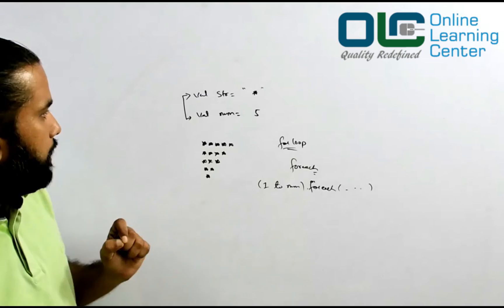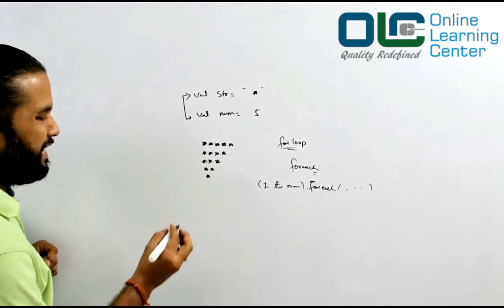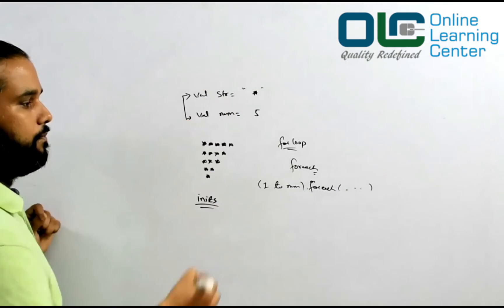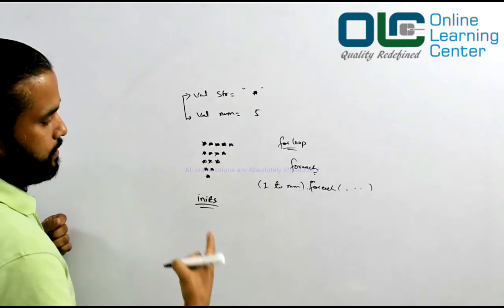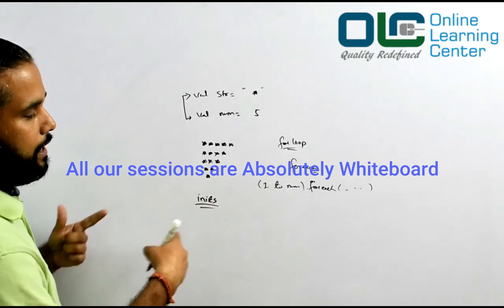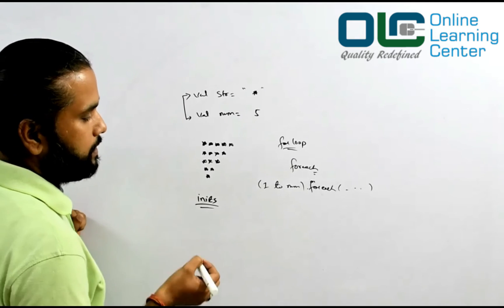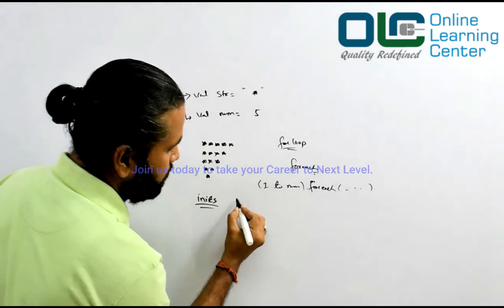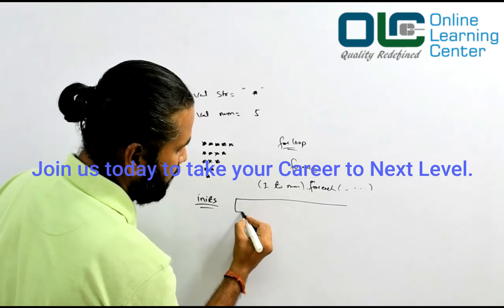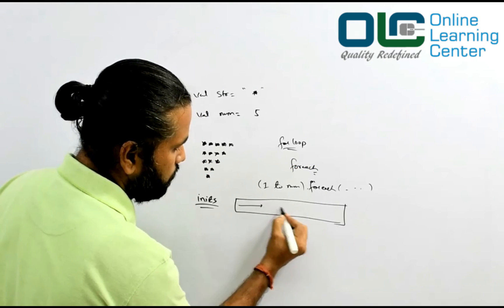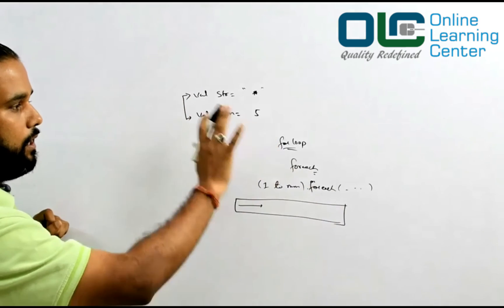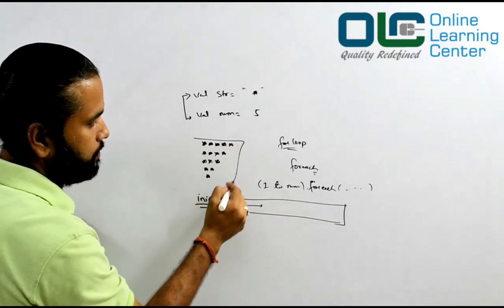So as a hint, try to use the concept of units to solve this problem. Get these values ready, use this unit concept and try to see if you can do it. And more interestingly, try to solve this problem using a single line - one line of code - and you should be able to get this printed on the screen.